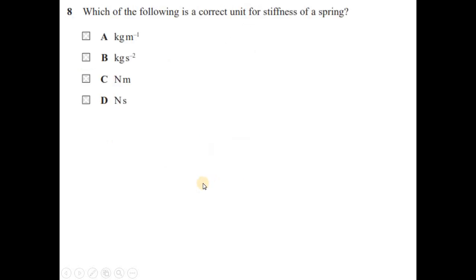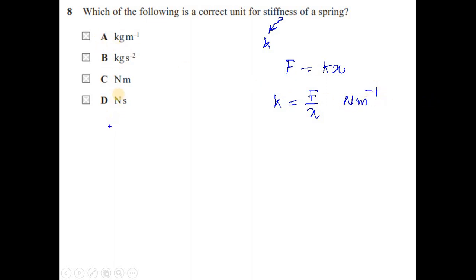Question 8: which is the correct unit for the stiffness of a spring? Stiffness k comes from F = kx, so k = F/x, giving units of N m⁻¹. Time is not involved, so N m is wrong. Substituting N = kg m s⁻², the metres cancel and k has units of kg s⁻². The answer is option B.